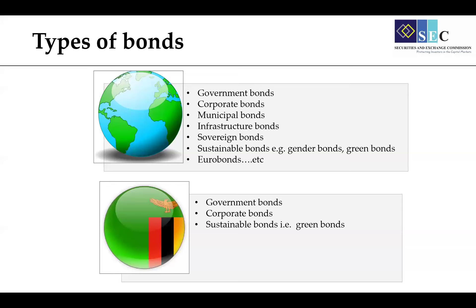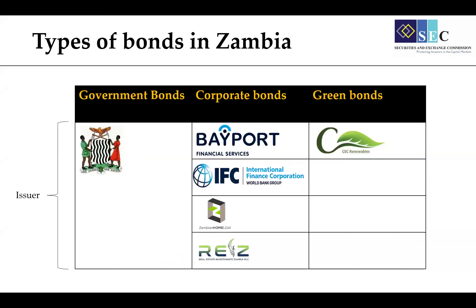Coming back to Zambia, the types of bonds available here are government bonds, corporate bonds, and green bonds. We do not currently have any municipal bonds. Several financial institutions and corporates have issued corporate bonds, and there is currently one issuer that has issued a green bond.